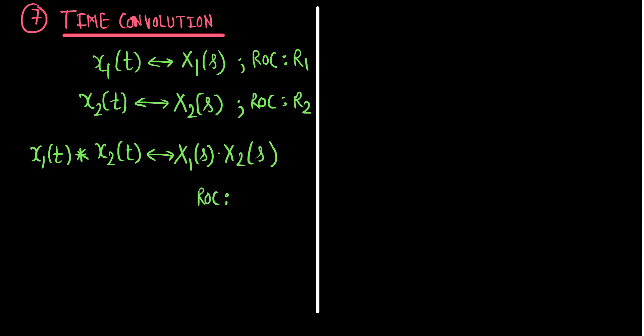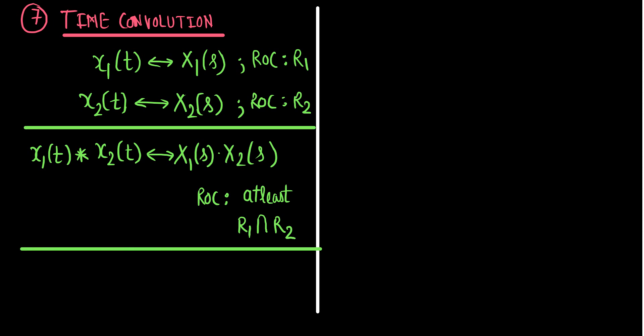The region of convergence is going to be at least R1 ∩ R2 — the overlapping region of R1 and R2. So the time convolution property simply says that convolution in time corresponds to multiplication in the Laplace domain, with the ROC being at least the intersection of the individual ROCs.